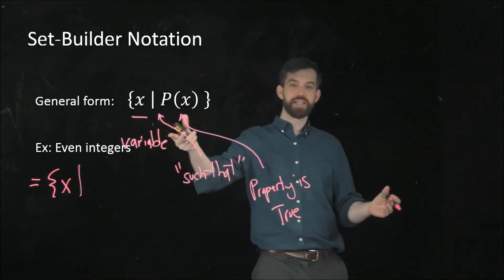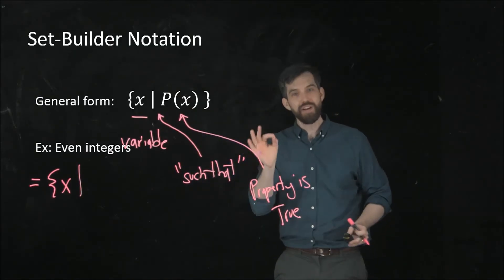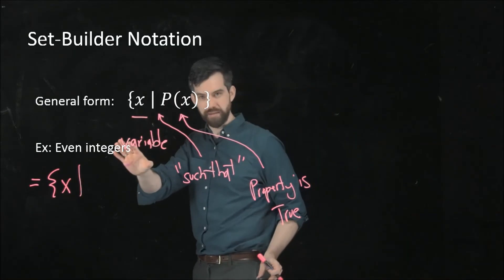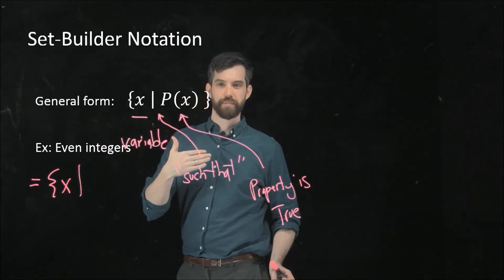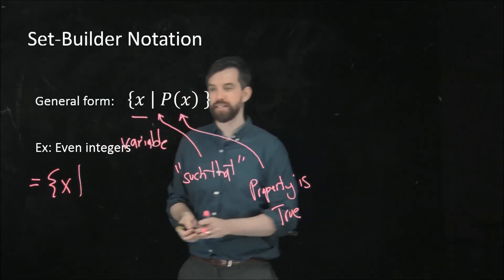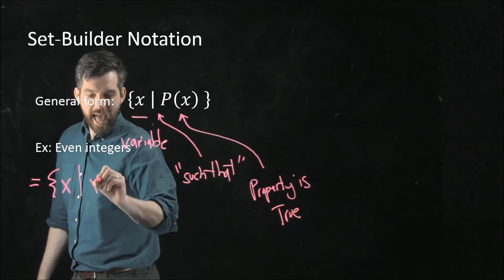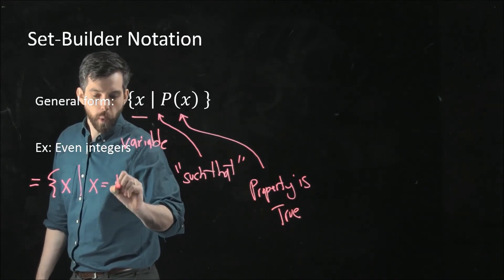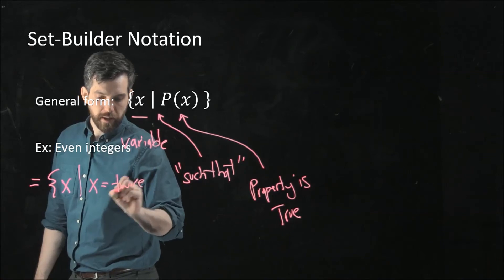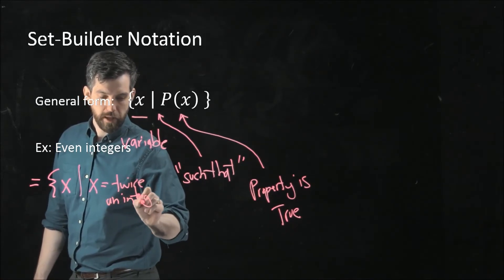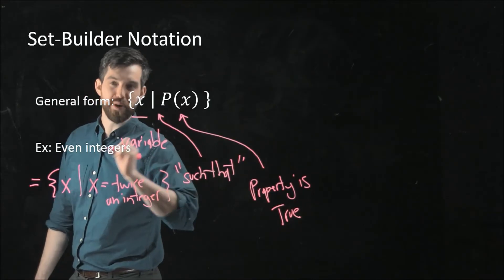An even integer is like 2, 4, 6, and so on. So an even integer is always 2 times some other integer. So what I'm going to say here is that my property is that my x is twice an integer. It is twice some number.